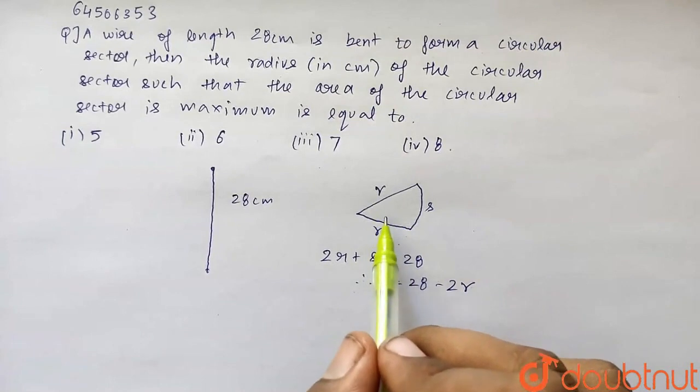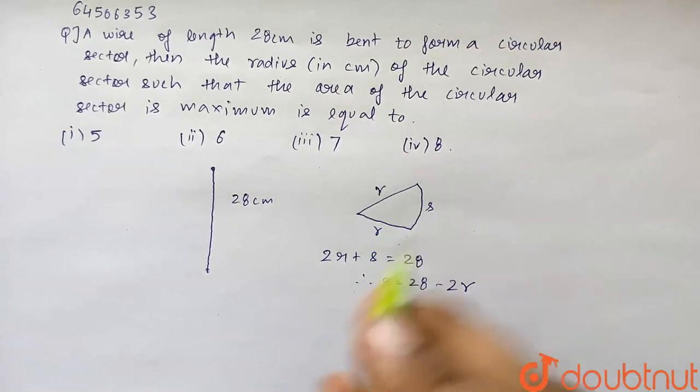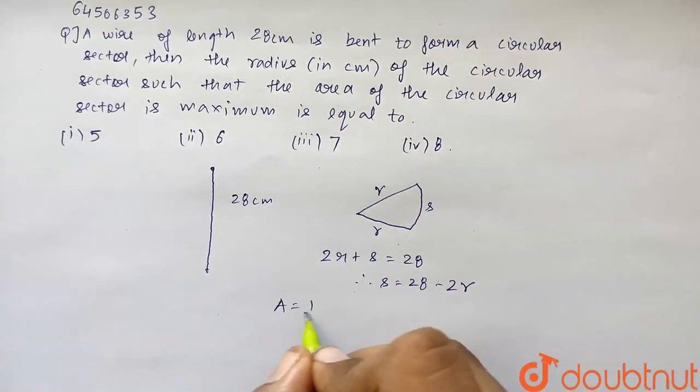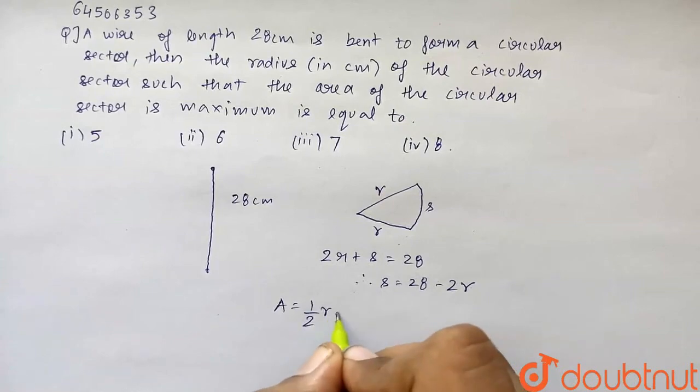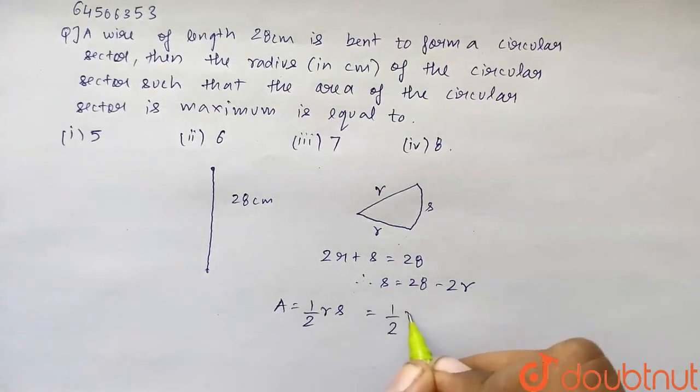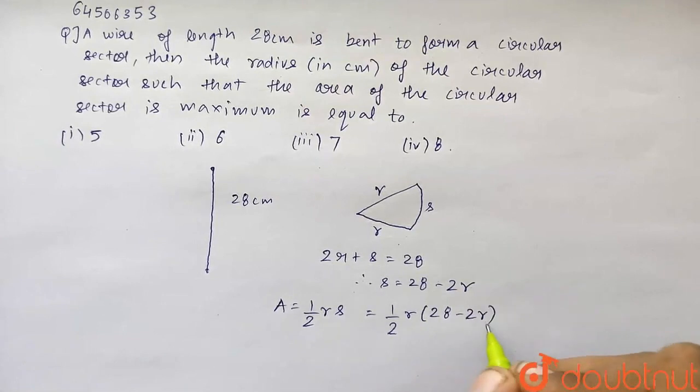So now we know that the area of this circular sector is given as area equals half into R into S. This is the formula for the area of the circular sector. So it can be written as half into R into 28 minus 2R from the above that we got.